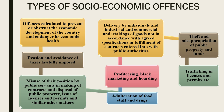There are cases where tax evasion has been correctly and firmly disapproved by the courts, yet it is pertinent to mention that tax evasion actually shows the defects present in enforcement of the law. The third type is misuse of position by public servants in the making of contracts, disposal of public property, issue of licenses and permits, and similar matters. The fourth is delivery by individual, industrial, and commercial undertakings of goods not in accordance with agreed specifications when fulfilling contracts entered into with public authorities.